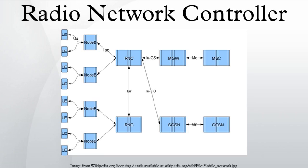The logical connections between the network elements are known as interfaces. The interface between the RNC and the circuit-switched core network is called IuCS, and between the RNC and the packet-switched core network is called IuPS.